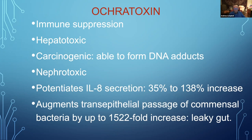Ochratoxin suppresses your immune system, is toxic to the liver, can change your DNA making it carcinogenic, and is toxic to your kidneys. It potentiates interleukin-8 secretion by 35 to 138 percent, increasing inflammation. It makes your gut so leaky that bacteria leak out by up to a 1,522-fold increase. This is where you get irritable bowel syndrome, leaky gut, inflammatory bowel disorders, and SIBO — and the treatment is to get rid of the mycotoxins, not treat the symptoms.